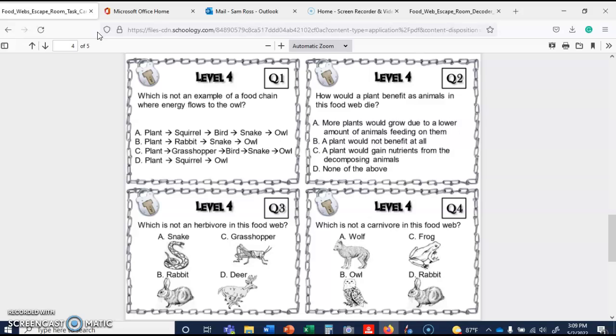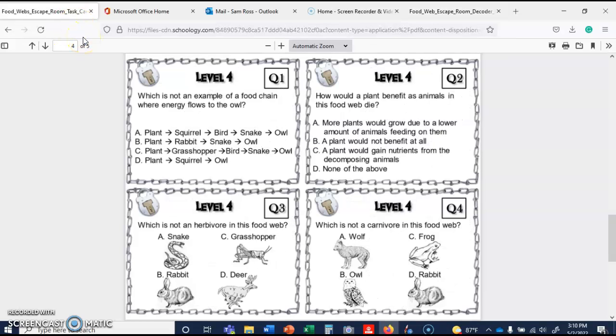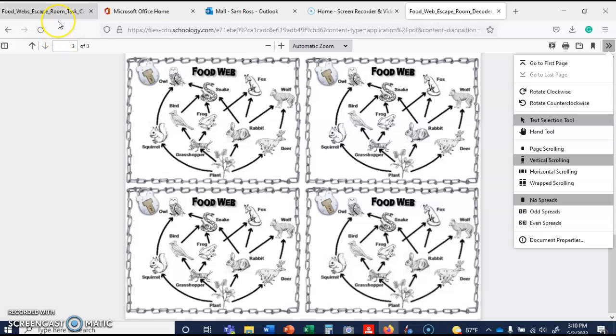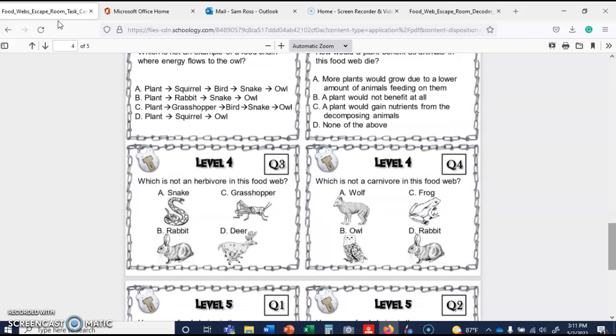And then on to level four, which is not an example of a food chain where energy flows to the owl. So plant, squirrel, bird, snake, owl. Plant, rabbit, snake, owl. Plant, grasshopper. We kind of need this to be okay. Plant, squirrel, owl. Plant, squirrel, bird, snake, owl. Plant, squirrel. That doesn't exist. It's A. That makes sense because it doesn't go through the bird snake. How would a plant benefit as animals in this food web die? So more plants would grow due to the lower amount of animals feeding on them. A plant would not benefit at all. A plant would gain nutrients from the decomposing animals. It's going to be that one. And then which is not an herbivore in this food web? So which one of these does not eat grass? And then in this one, which is not a carnivore? So which one of these does not eat meat?